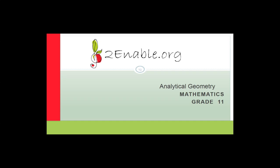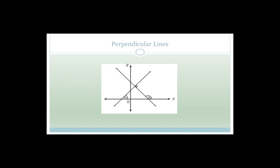Let's move on with analytical geometry. Last lesson we were talking about parallel lines and perpendicular lines. We said that for parallel lines the gradients are the same: M1 equals M2. With perpendicular lines, which means they are 90 degrees to each other, the gradients are negative inverses of each other. So M1 is equal to minus 1 over M2.